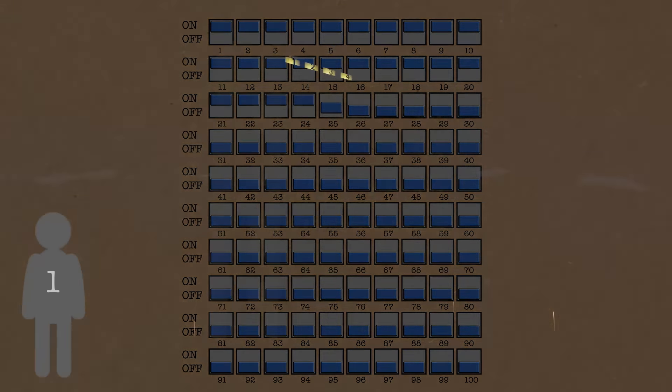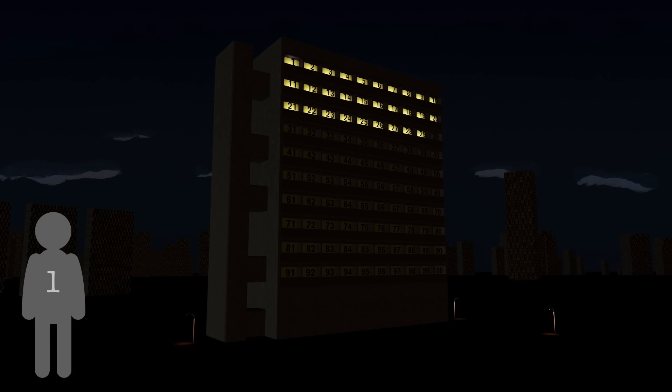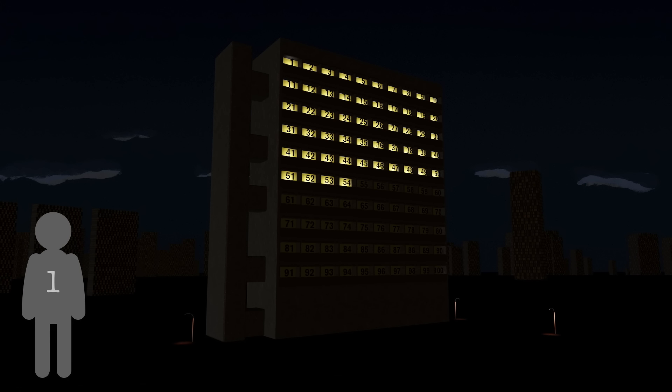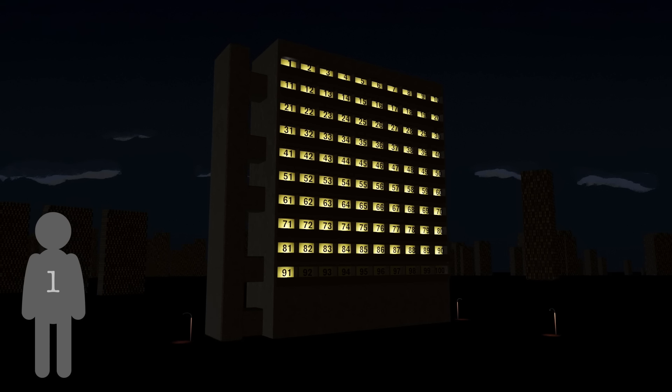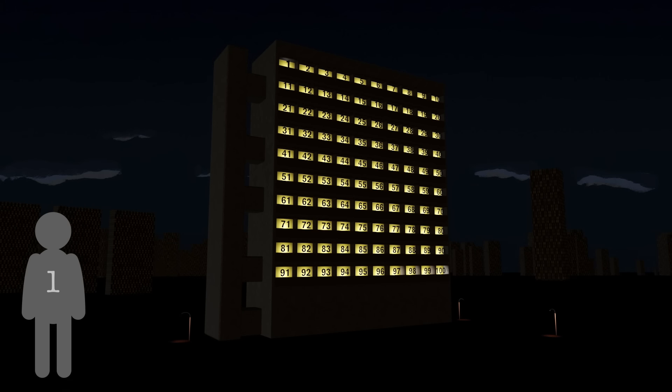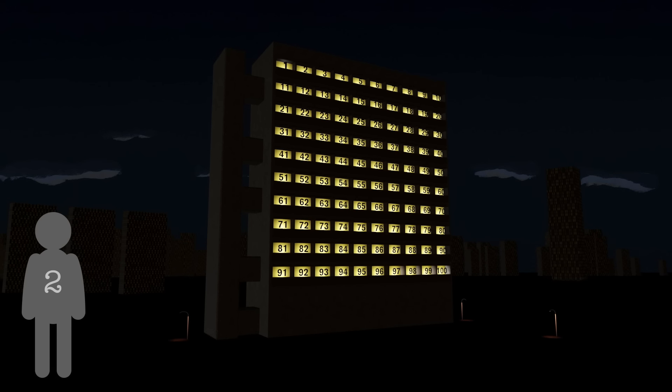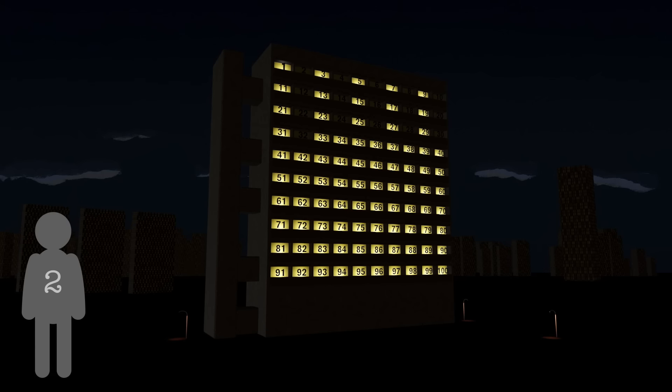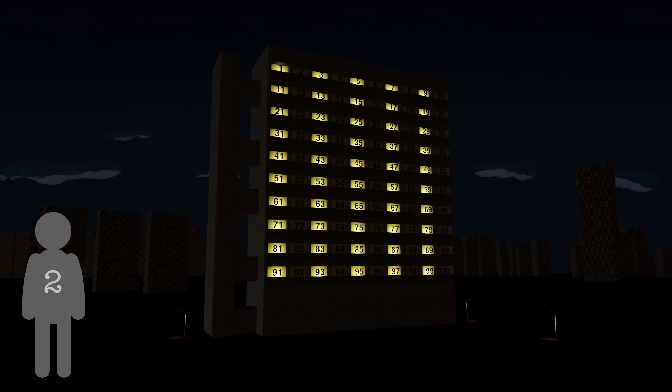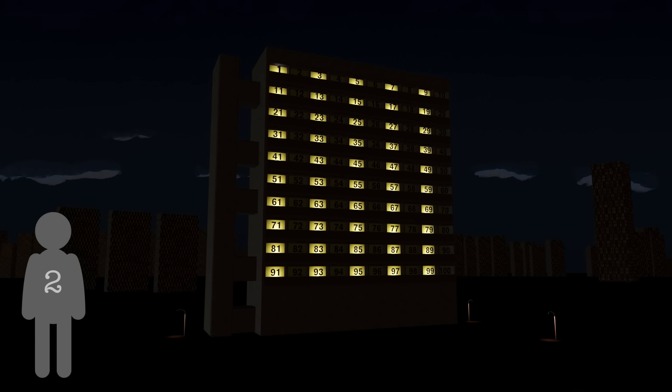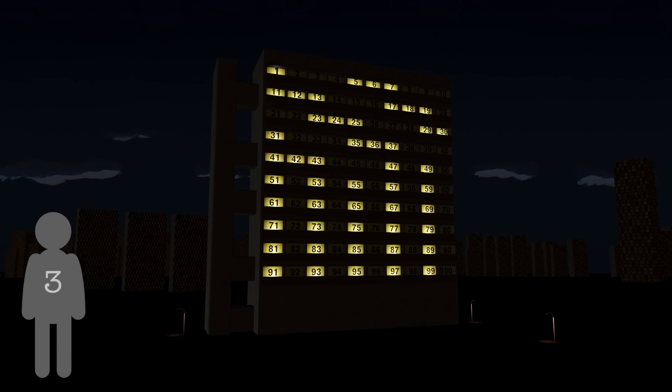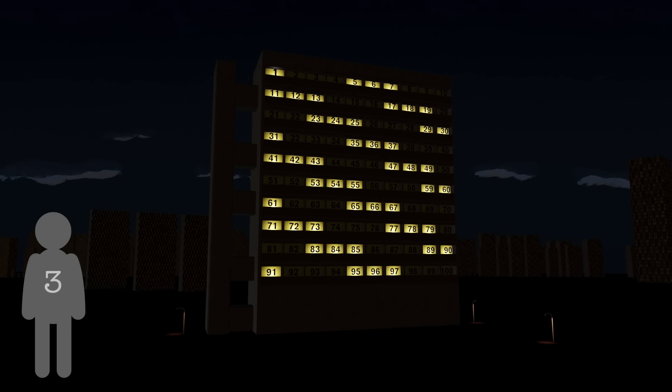The first person comes along and turns them all on. The second person turns every second light switch off. The third person deals with every third light switch - if they're on they'll turn them off and if they're off they'll turn them on. The fourth person deals with every fourth light switch. The fifth person deals with every fifth light switch. I suspect you have the pattern. And that continues for a hundred people. That's the setup.